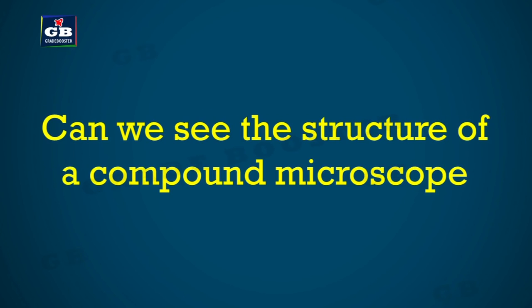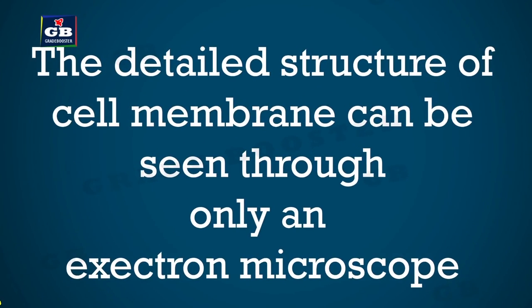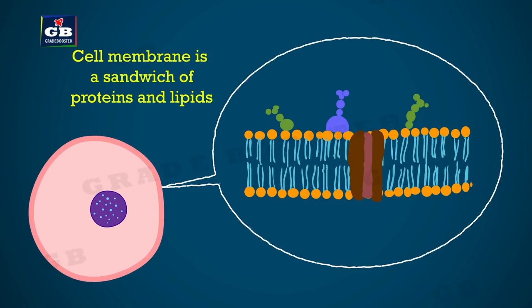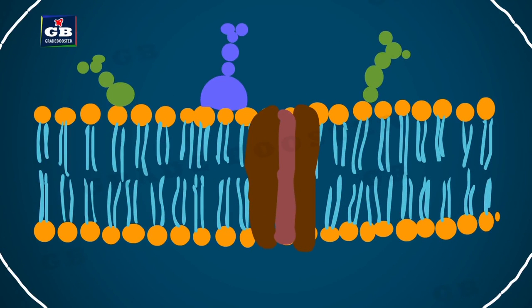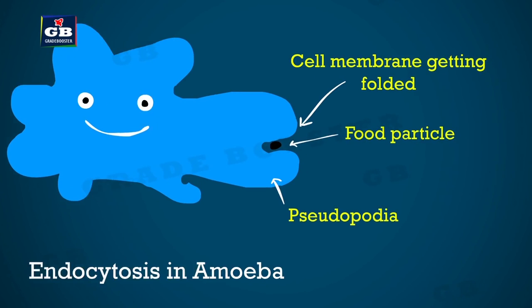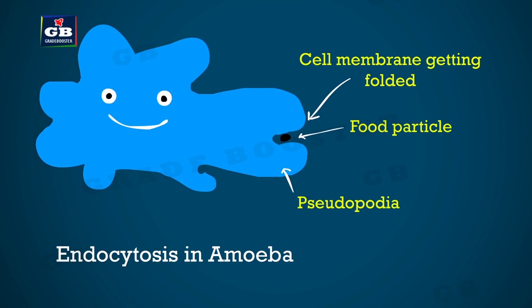The structure of the plasma membrane can only be seen through an electron microscope. The plasma membrane is made up of carbon compounds like lipids and proteins. Organisms like amoeba engulf food materials through their cell membrane; this process is called endocytosis.